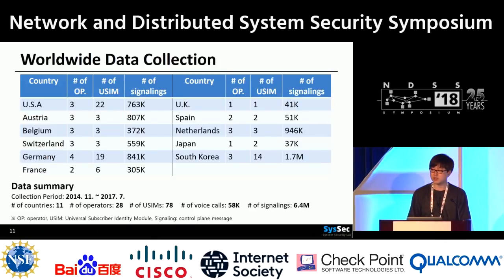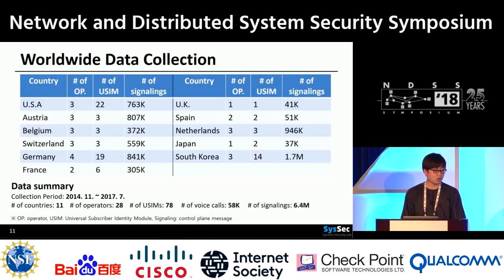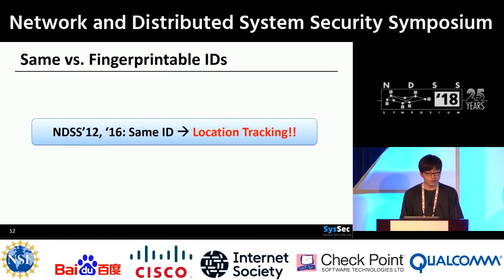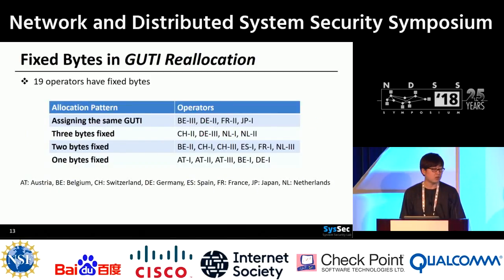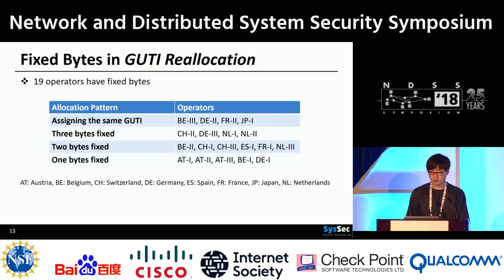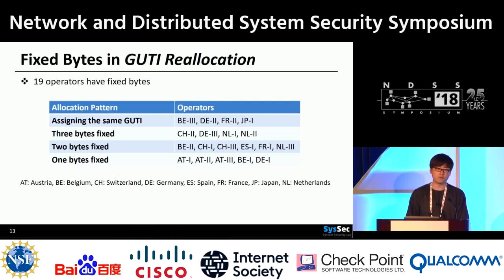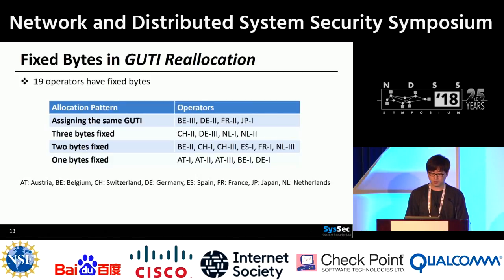We already know that location tracking is possible if the GUTI is not changing. In this work, we showed that location tracking is possible even with a changing temporary identifier. In the experiment, we found that a total of 19 carriers out of 28 used partially fixed bytes after GUTI reallocation. The attack is very simple: just look for fixed bytes. If we consider only the fixed bytes, the attack method is the same as with previous works.